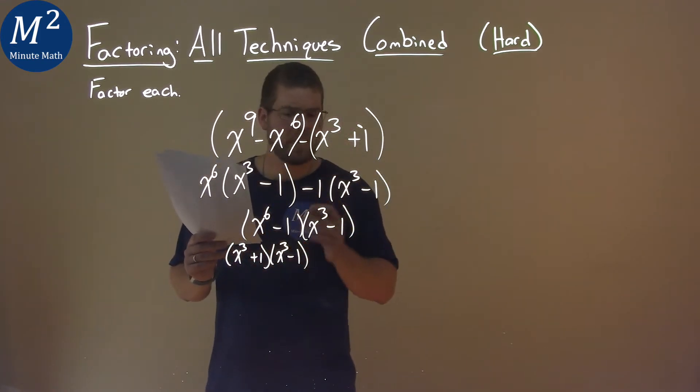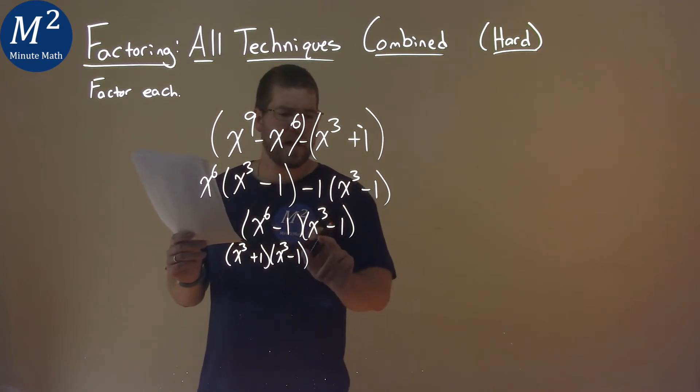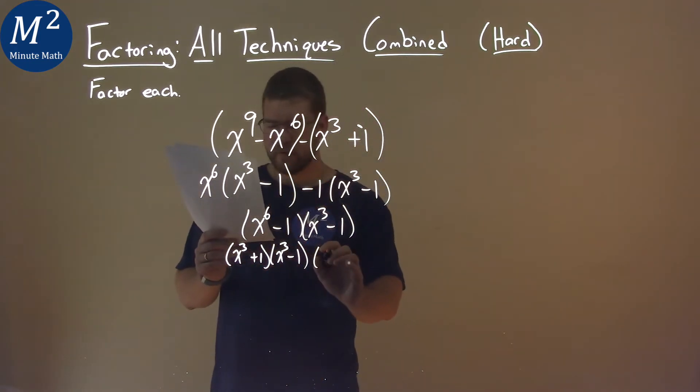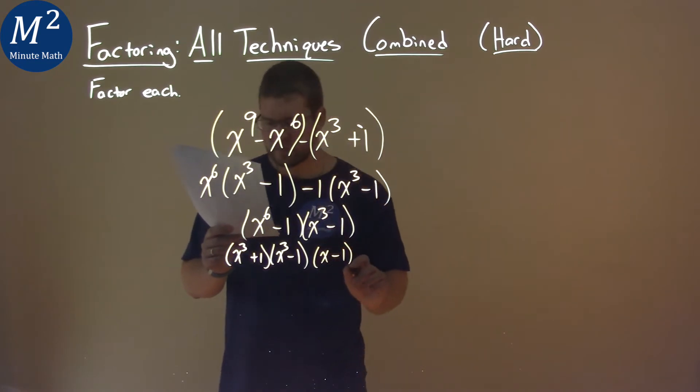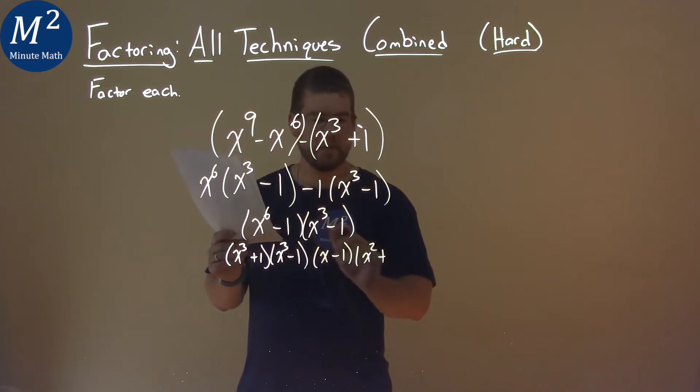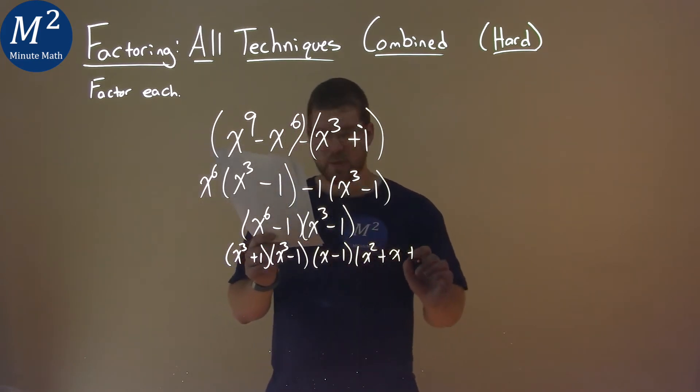So now the right one. This one's a little different. This one, we're actually going to use the difference of cubes. We have our x to the third, which is a cube, but one is also a cube. One cubed is one. So using our formula, the difference of cubes, we have an x minus one here, times it's going to be x squared plus one times x, which will just be x, plus one squared, which is one.